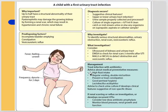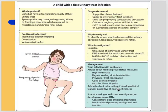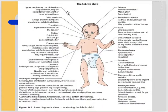Treat the infection with antibiotics. Advise medical preventive measures: high fluid intake, regular voiding, double micturition, prevent or treat constipation, good perineal hygiene. Lactobacillus acidophilus can be given. Check urine culture if clinical features develop. If renal scar or reflux is found on investigation, consider antibiotic prophylaxis, and if there is a treatable structural abnormality, treat that surgically.